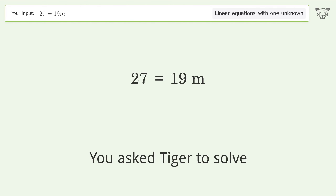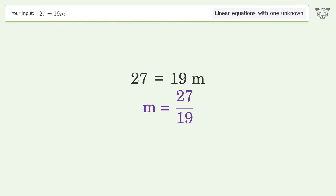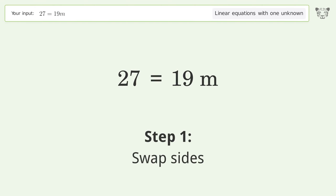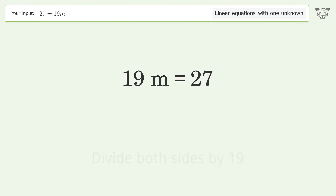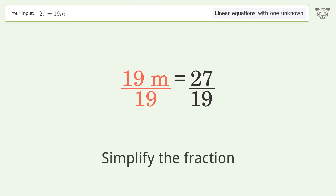Tiger was asked to solve a linear equation with one unknown. The final result is m equals 27 over 19. Let's solve it step by step: swap sides, isolate the m, divide both sides by 19, and simplify the fraction.